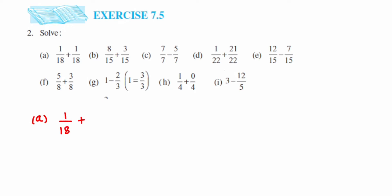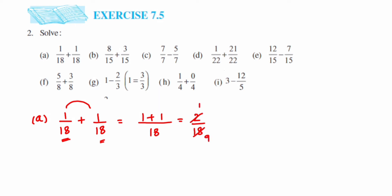1 upon 18. If you look at this question, the denominators are both 18, so it's a like fraction. Whenever we have a like fraction, keep the denominator the same and simply add the numerators. So 1 plus 1 is 2, we get 2 upon 18. Reducing to simplest form: 2 ones and 2 nines are 18, so this equals 1 upon 9.